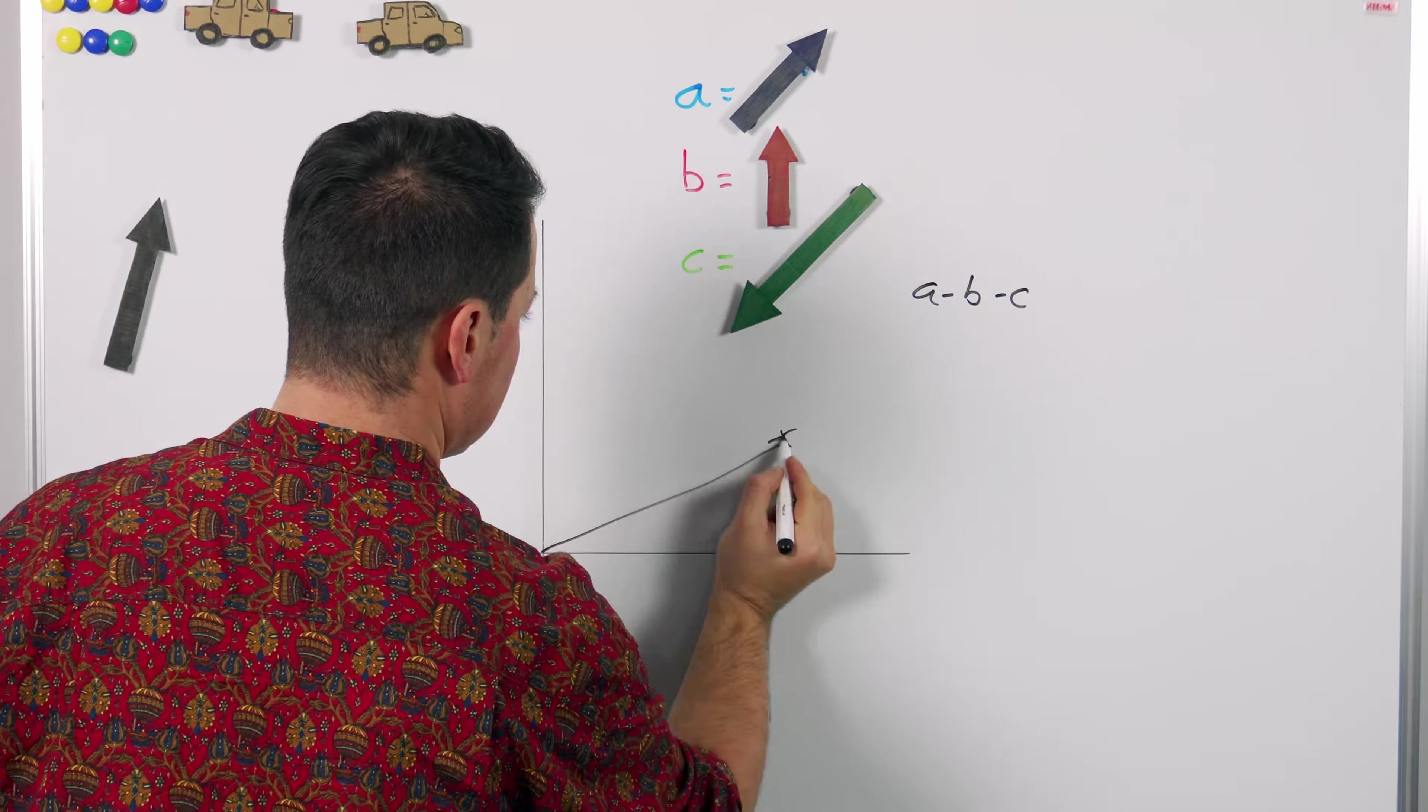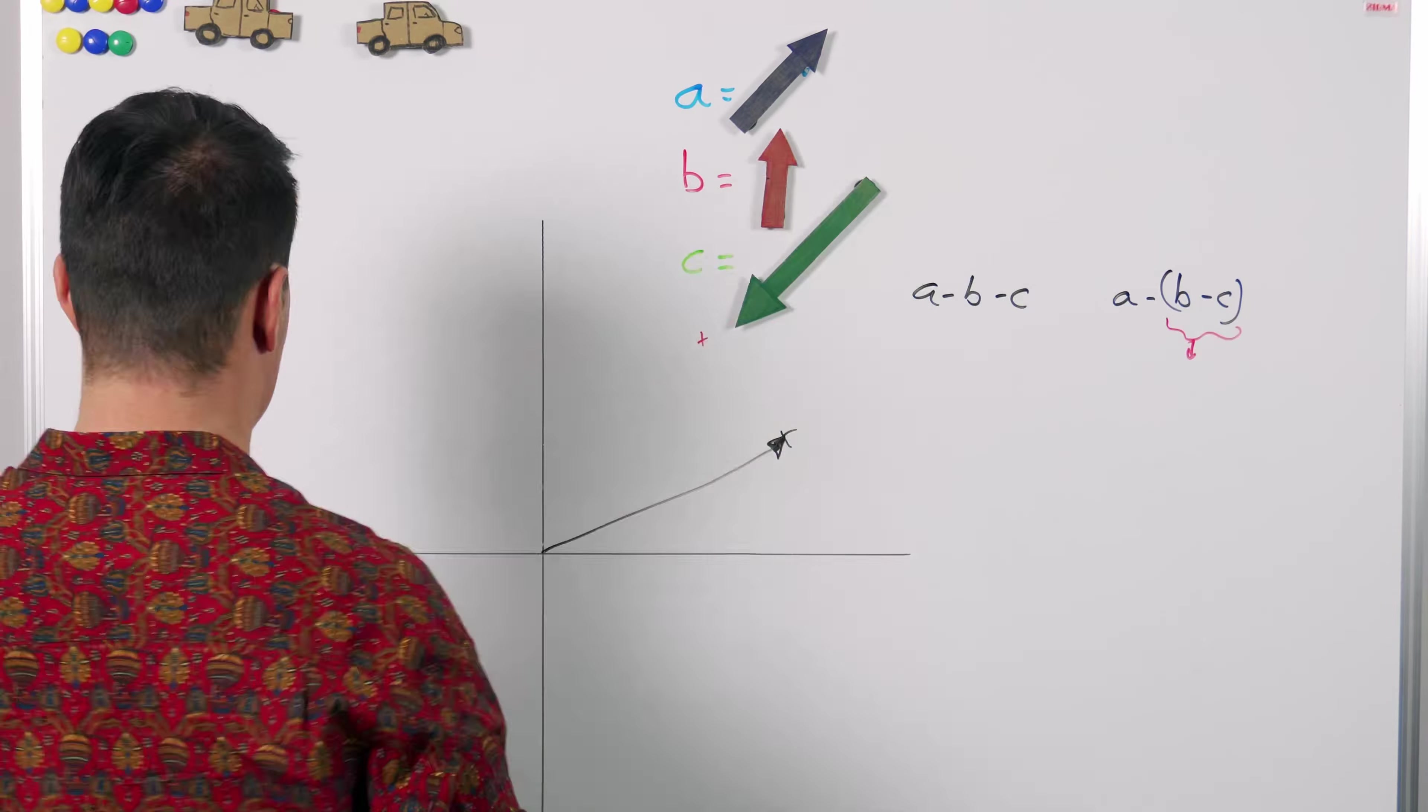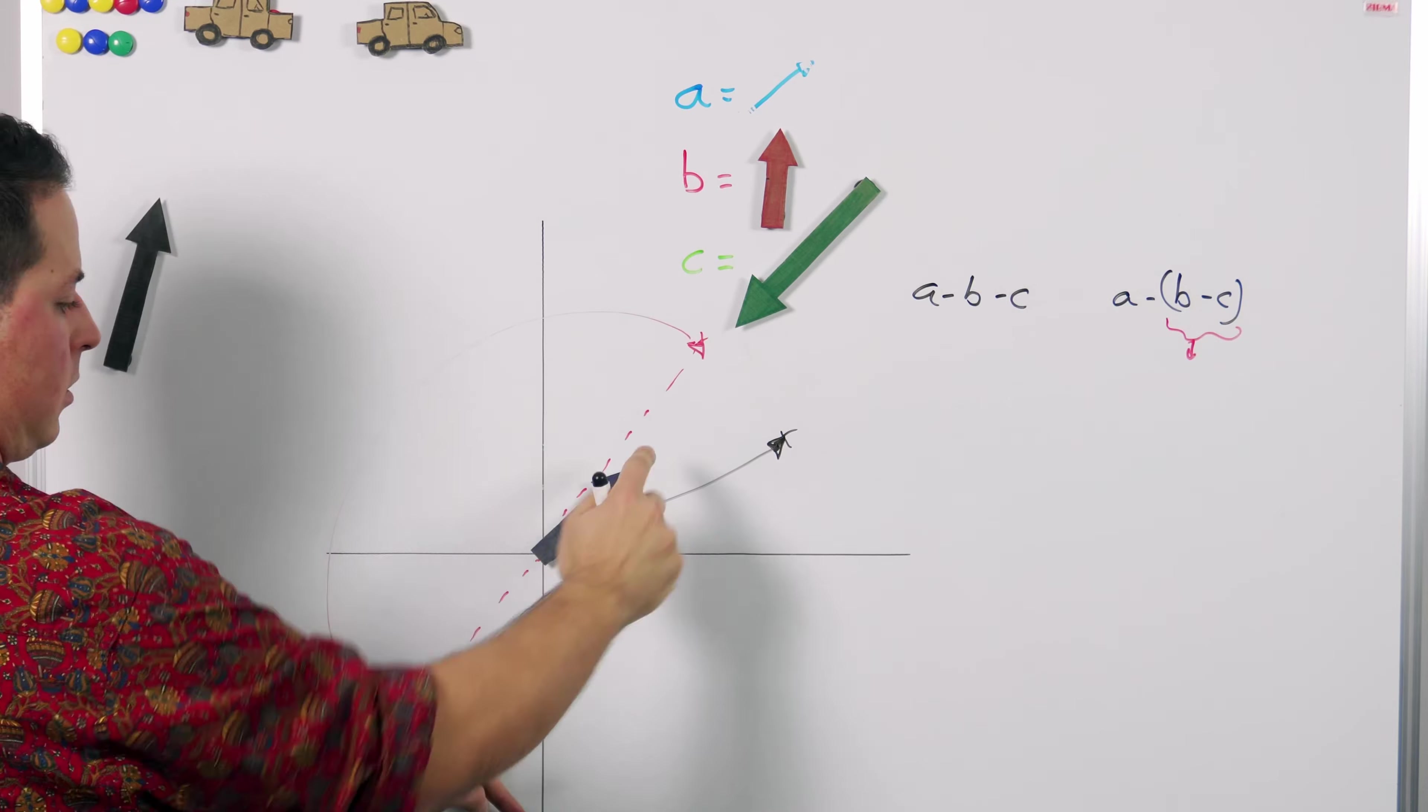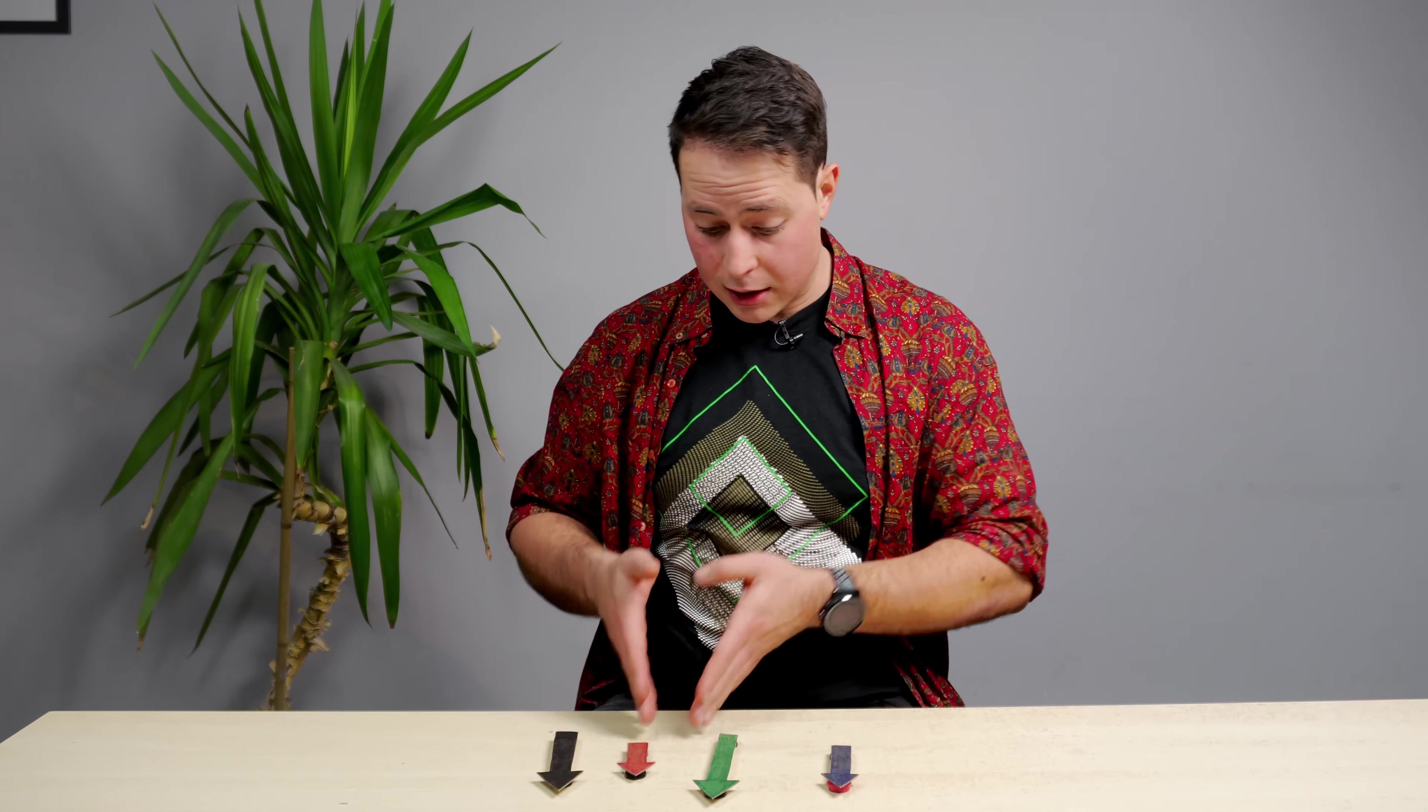And vector subtraction is also not associative because regrouping the vectors delivers different results. The lesson here is just to pay attention to the order of the vectors when subtracting and not to group them randomly.